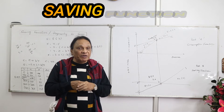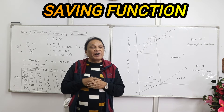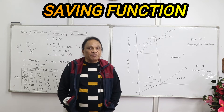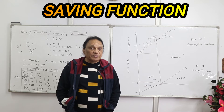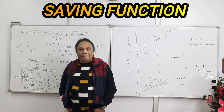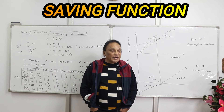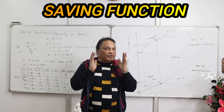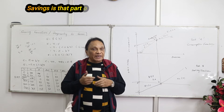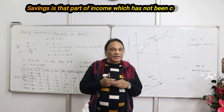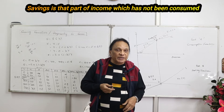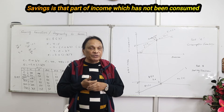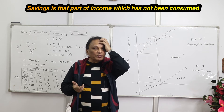This is the saving function or propensity to save. We've already seen the consumption function or propensity to consume in one of the earlier videos. Let's not mix up the consumption function with the saving function, though they have a very close correlation. Savings is that part of income which has not been consumed — that part of national income which has not been consumed. We find savings by subtracting consumption from disposable income: S = Y − C. For example, if income is 100 crores and consumption is 80 crores, savings will be 20 crores.